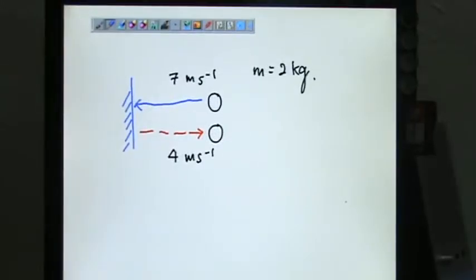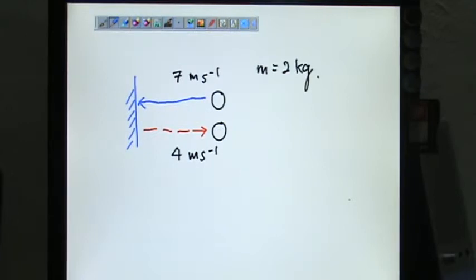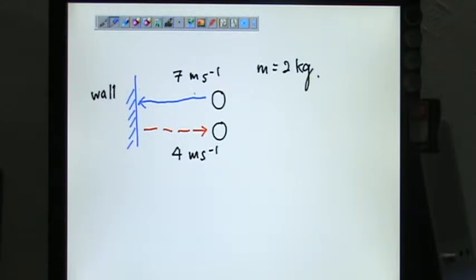If you look at this diagram, one ball is moving to the left and hit the wall, hitting on the wall. So it hits on the wall and traveling at a velocity of 7 meter per second.